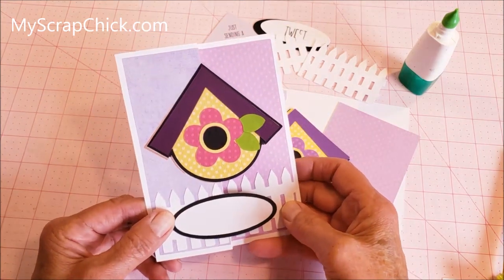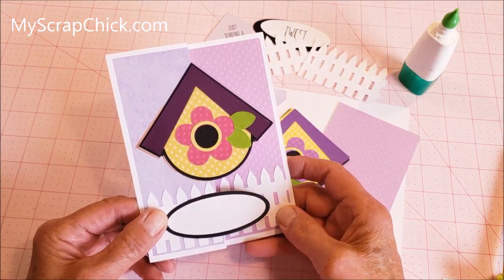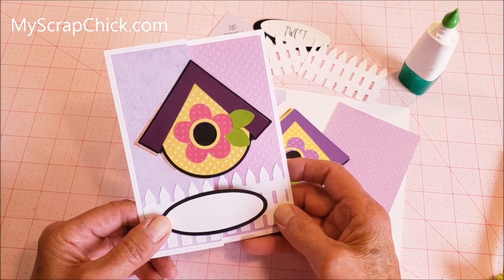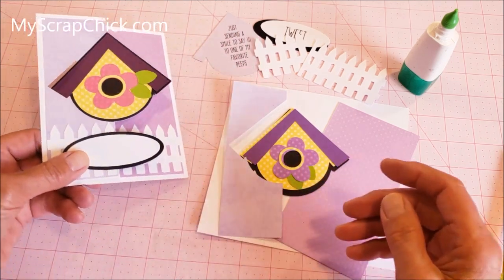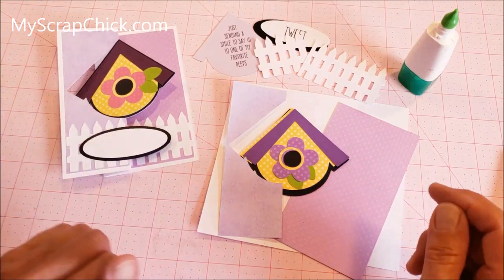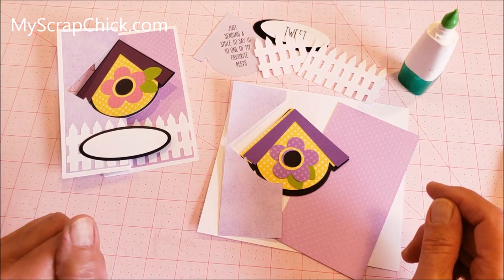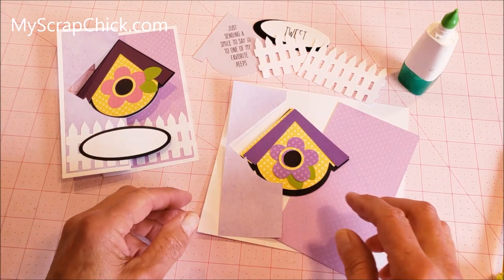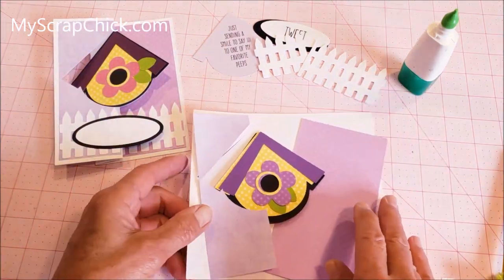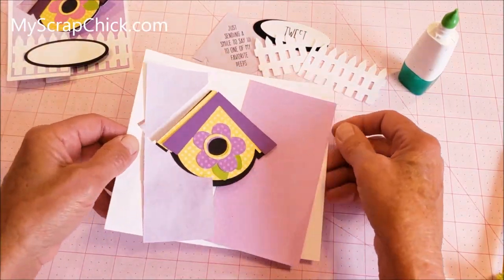It's the birdhouse swing card and this week only it's also a freebie Friday. After the freebie Friday expires, you can purchase it for two dollars a piece or get it during one of the dollar sales for a dollar when you buy five items. So let me get started with this.